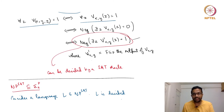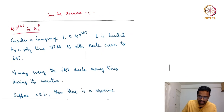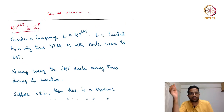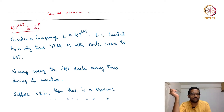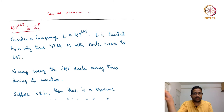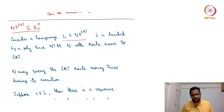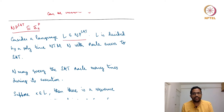The other direction remains: showing that NP with access to a SAT oracle is contained in Sigma_2. We take an arbitrary language L from NP^SAT, which means L is decided by a non-deterministic polynomial-time machine N with oracle access to satisfiability.